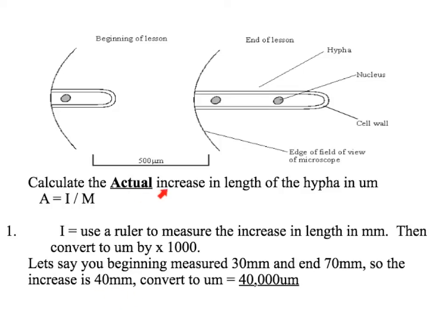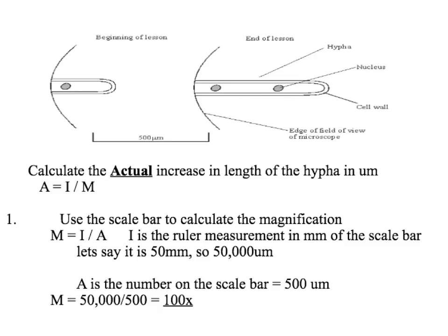We want the actual size in micrometres, so we need to convert this: times it by 1000, so 40,000. We've got the image size of 40,000 micrometres. We need the magnification to be able to work out the actual size, but there's nothing in the question which tells us the magnification — so we need to use the scale bar to do that. You can get the magnification from the scale bar.